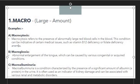The second example is macroglossia. Macroglossia refers to abnormal enlargement of the tongue, which can be caused by various congenital or acquired conditions. Congenital means the situation which is present from birth. Here macro is again representing large amount — the enlargement of the tongue. The third example is macroalbuminuria, which is a condition characterized by the presence of a significant amount of albumin protein in the urine.